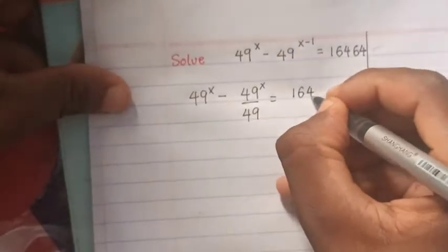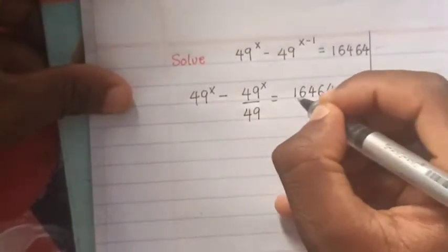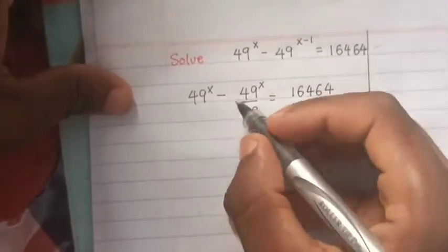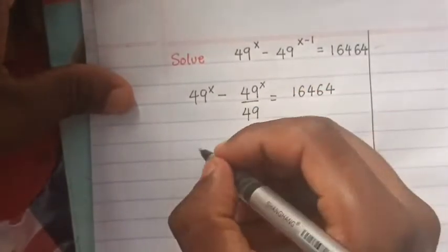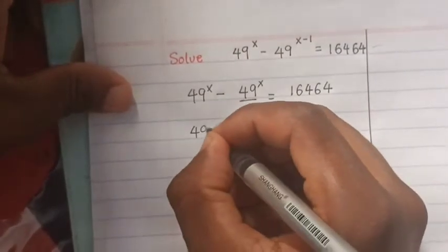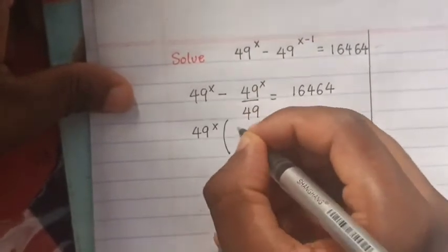Then we substitute 49^x outside the bracket, so it'll be 49^x times (1 minus...